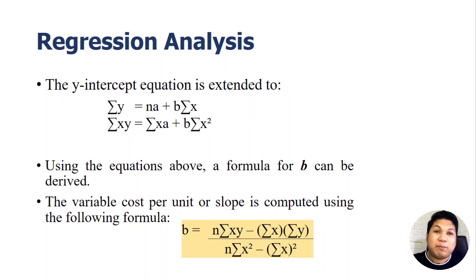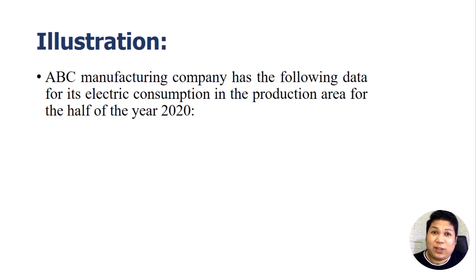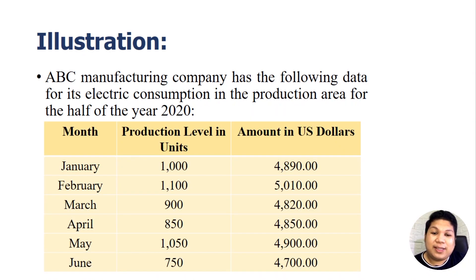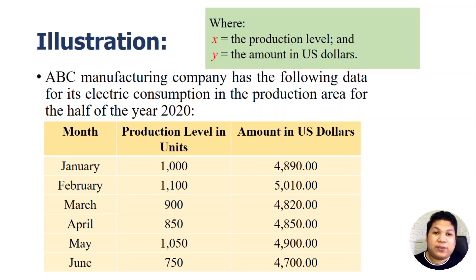Let's use the same illustration from our previous video. ABC Manufacturing Company has the following data for its electric consumption in the production area for the first half of 2020 — January to June. We used the same example in our previous two videos, but those focused on only two points. In this method, we are going to use all of them. Here, x is the production level — our independent variable — and y, the dependent variable, is the amount of electric consumption in US dollars.